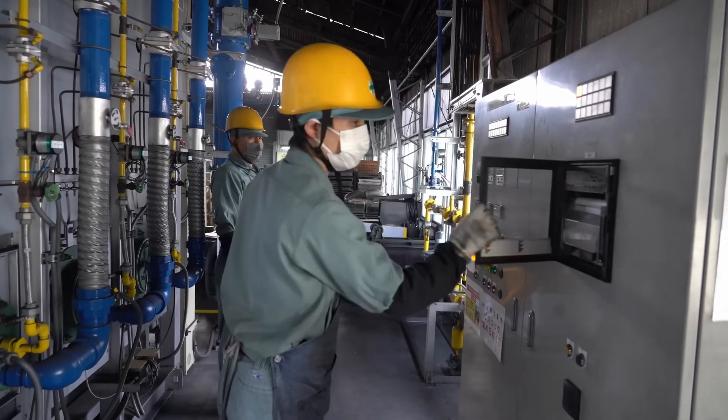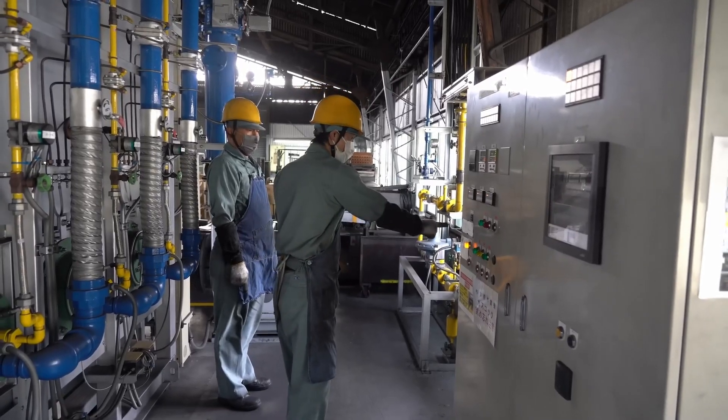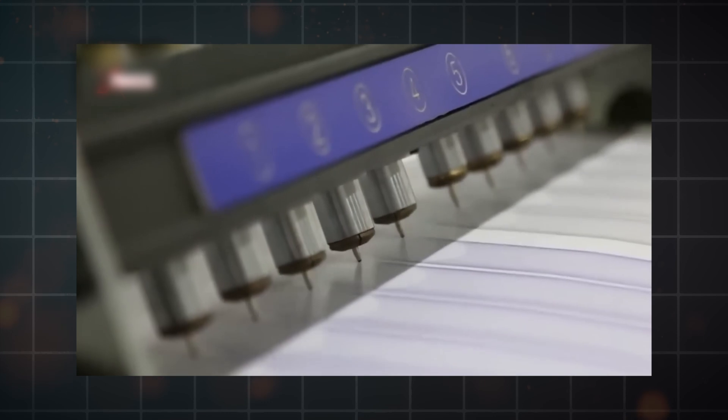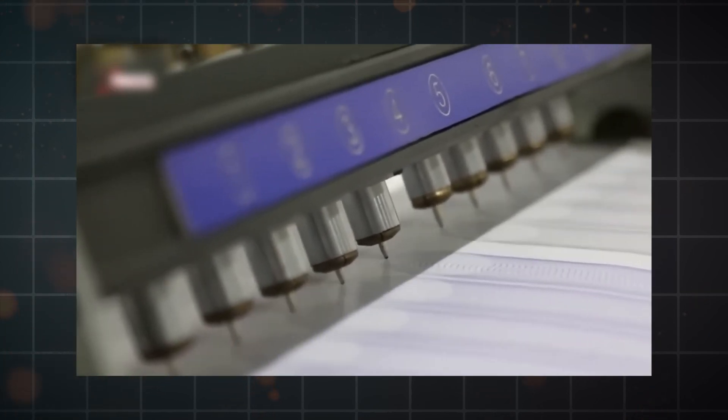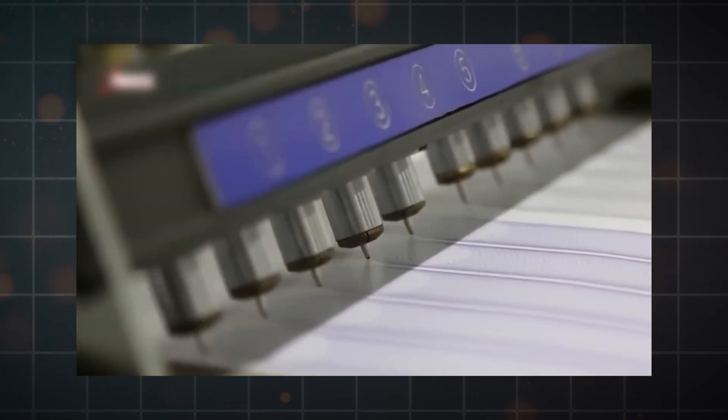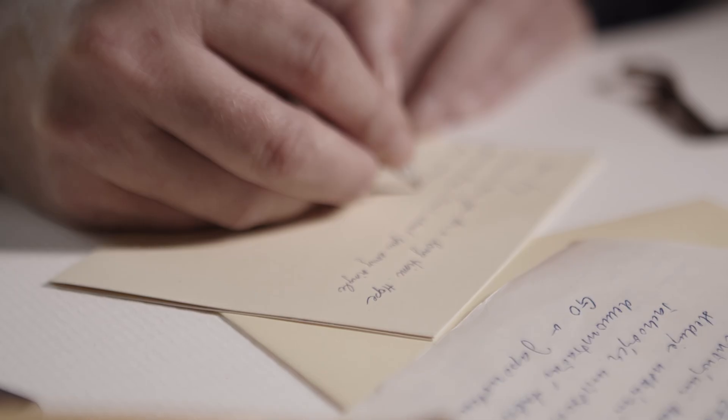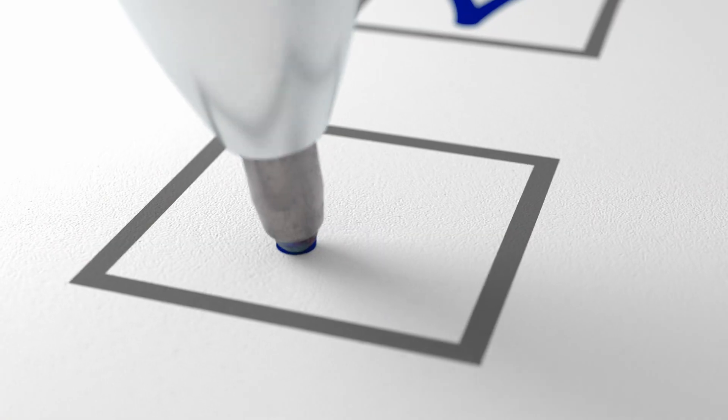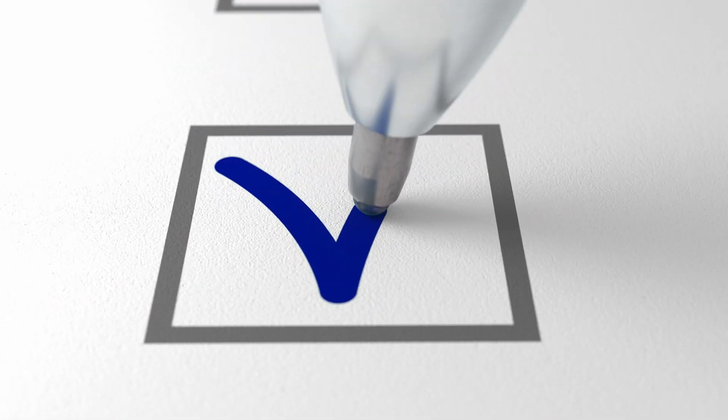During the filling process, quality control is key. Pens are tested to ensure they write correctly and do not leak. This might involve writing tests where machines check the ink flow on paper, ensuring that every pen meets the high standards expected by users. This phase of pen manufacturing ensures that when you pick up a pen to write, it delivers a smooth and reliable line from the first word to the last.